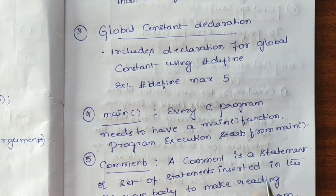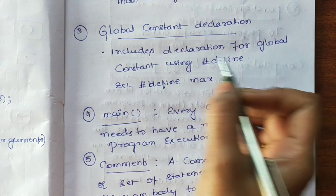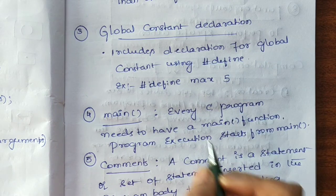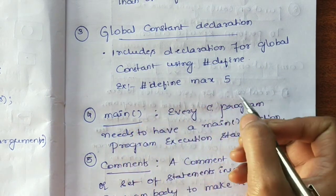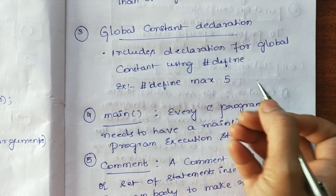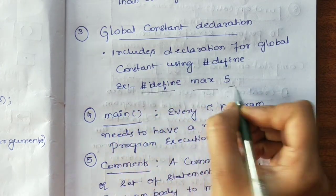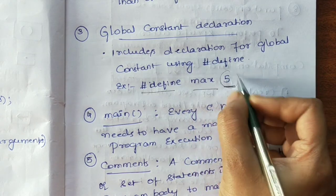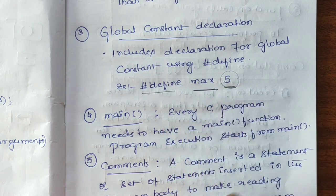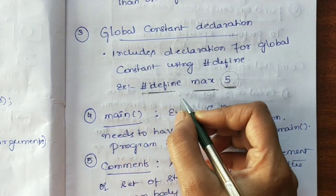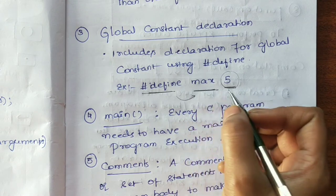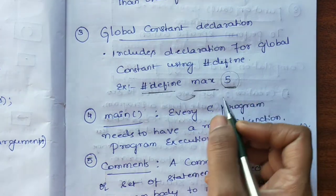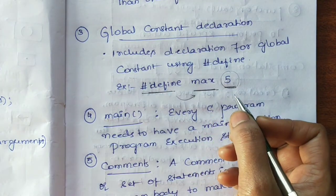Next is global constant declaration. Like variable declaration, we can do global constant declaration also using the #define statement. Suppose we are doing a stack program, then #define MAX 5. The size of the stack or queue can be set to 5 by using this constant MAX. So #define is mainly used to store some constant value, written as #define space MAX space 5. Like this, we declare global constants.